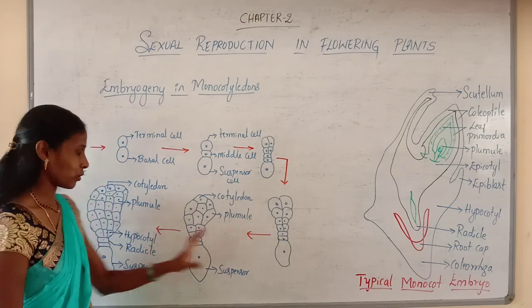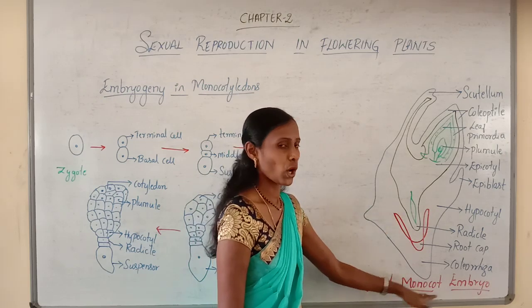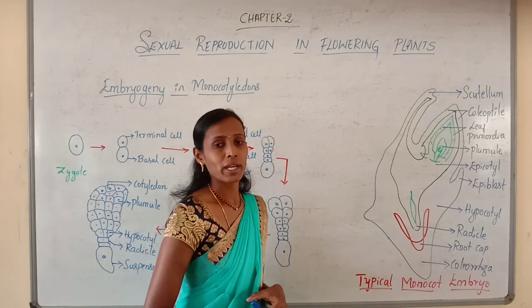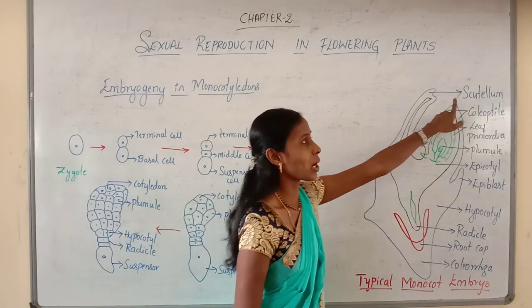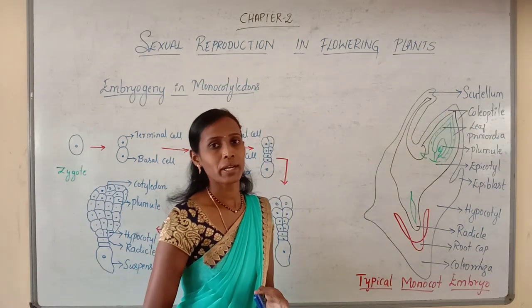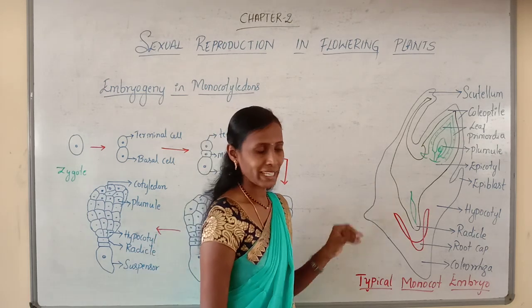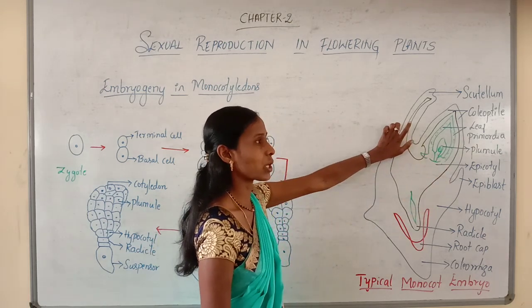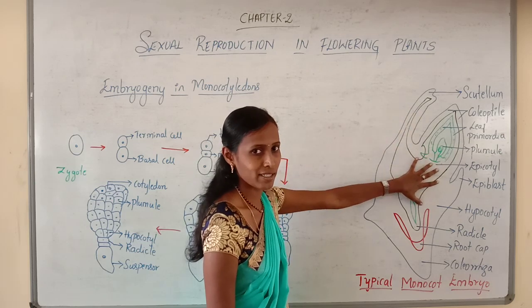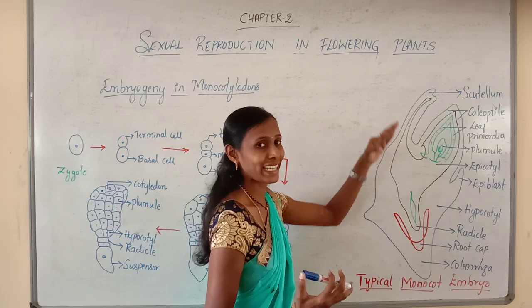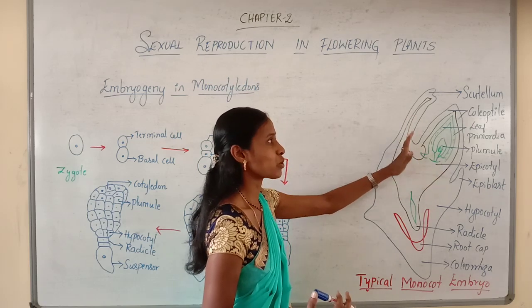Now we will discuss the mature monocot embryo. A typical monocot embryo is mainly comprised of an embryonal axis and a single cotyledon called the scutellum. You should remember that the term scutellum is used only in monocotyledons. The scutellum lies towards the lateral side of the embryonal axis, because as the scutellum grows rapidly, the plumule is pushed towards one side.